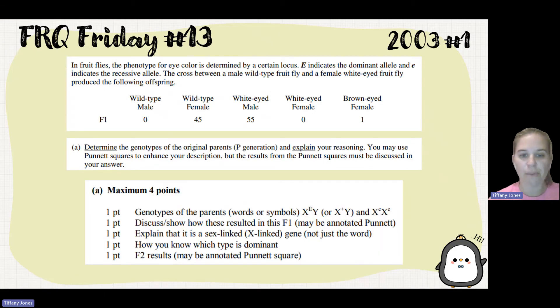So as you see, we have the genotypes of the parents. We discussed and showed how we got the F1. We talked about how it was sex-linked and we knew how it was dominant. And then of course we showed the F2 results. That's how you could have gotten your points.